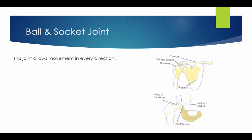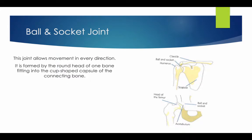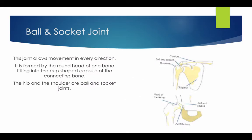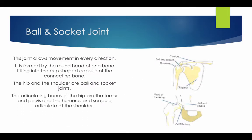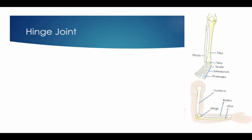The ball and socket joint can be found at the shoulder and the hip. This joint allows movement in every direction. It is formed by the round head of one bone fitting into the cup-shaped capsule of the connecting bone. The articulating bones of the hip are the femur and the pelvis, and the humerus and the scapula articulate at the shoulder.